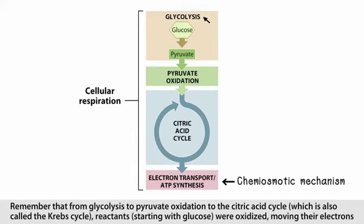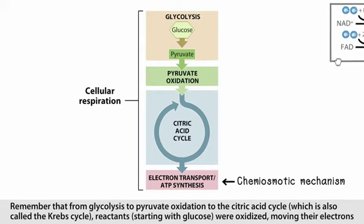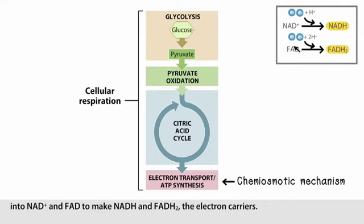Remember that from glycolysis, to pyruvate oxidation, to the citric acid cycle — which is also called the Krebs cycle — reactants starting with glucose were oxidized, moving their electrons into NAD+ and FAD, to make NADH and FADH2, the electron carriers.